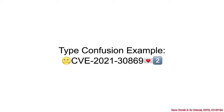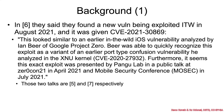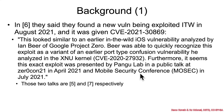Now let's talk about a variant of that previous vulnerability which was found in the wild a bit later. Google found a new vulnerability being exploited in the wild in August of 2021, and this was given CVE-2021-3086.9. Their write-up said this looked similar to an earlier in-the-wild vulnerability analyzed by Ian Beer of Google Project Zero. Beer quickly recognized this exploit as a variant of an earlier port type confusion vulnerability he analyzed in the XNU kernel — the one we just looked at. This exact exploit was also presented by Pangu Lab at Zerocon 2021 in April and at the Mobile Security Conference (Mosec) in July of 2021, references 5 and 7 respectively.